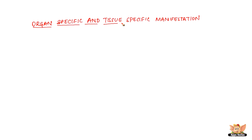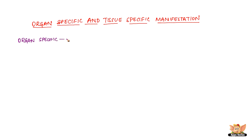Organ-specific and tissue-specific manifestation: What happens when disease-causing microbes enter the body? They can either go to some organ or some tissue. Depending on where they have entered the body from, specific organs or tissues will be affected. Let's see the organ-specific manifestation.